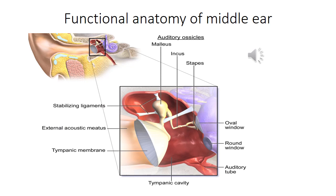Now, coming to the three tiny bones inside the middle ear. One is the malleus, another is the incus, and the last one — the smallest bone in the human body — is the stapes, which looks like a stirrup. The handle of the malleus is attached to the internal surface of the tympanic membrane, and the footplate of the stapes is attached to the oval window. These two bones are connected in the middle by the incus.